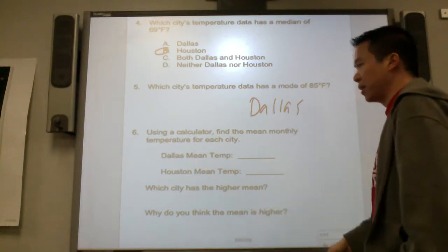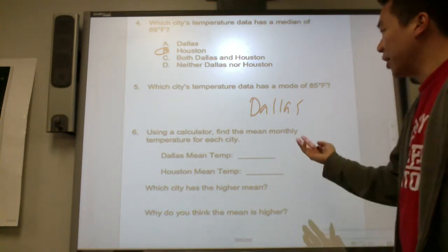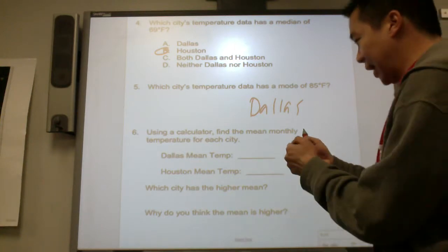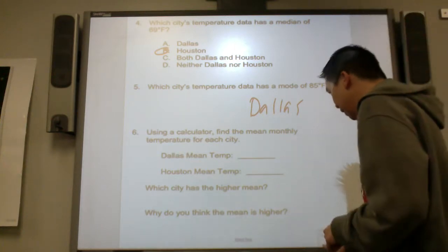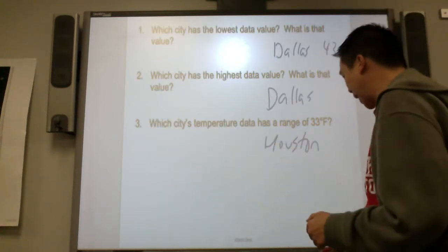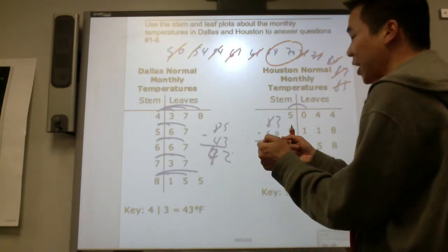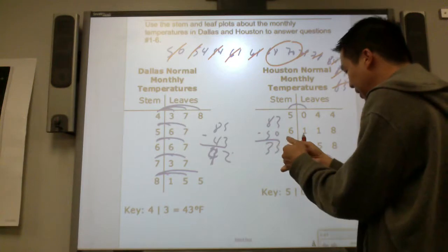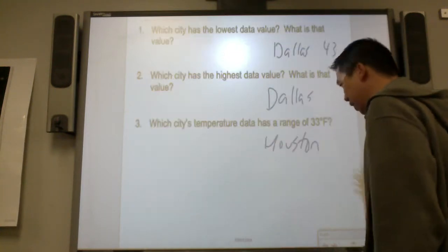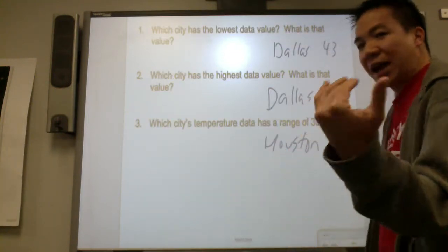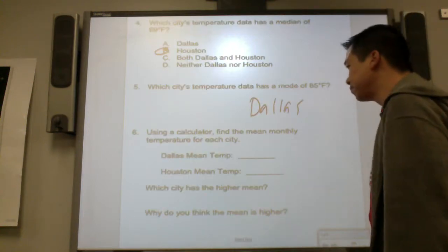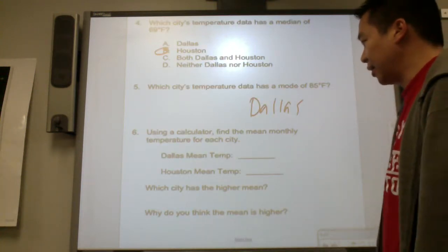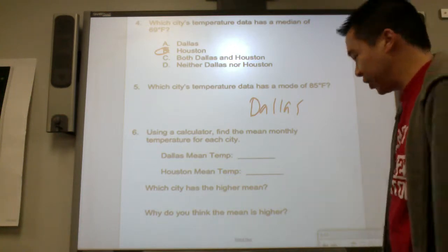I'm not going to do the next one because I don't have a calculator. But if I had one — find the mean monthly temperature for each city. For Dallas, I would add all the Dallas numbers and divide by ten. Then add all the Houston numbers and divide by ten. Remember, mean is the average: add up all the numbers and divide by how many numbers there are.